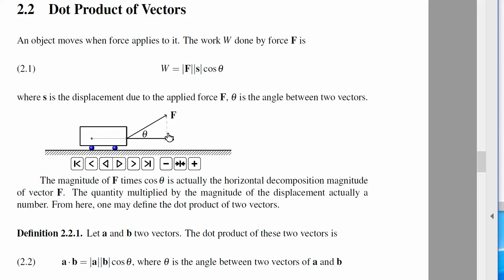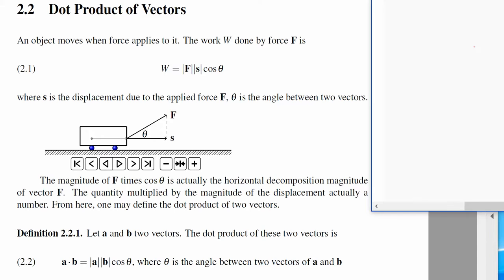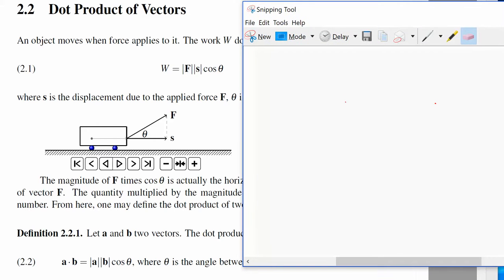Then we know the horizontal direction will be the length of F. That will be the magnitude of F, F times cosine theta, which is this angle.